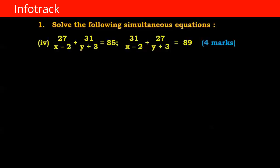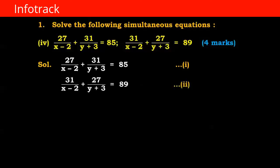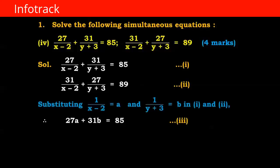See the next question. The equations are 27 upon (x minus 2) plus 31 upon (y plus 3) equals 85 — equation number 1. The second equation is 31 upon (x minus 2) plus 27 upon (y plus 3) equals 89. Substituting 1 upon (x minus 2) equals a and 1 upon (y plus 3) equals b in equations 1 and 2.